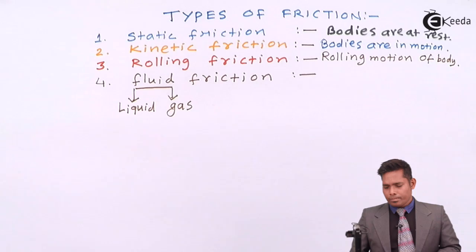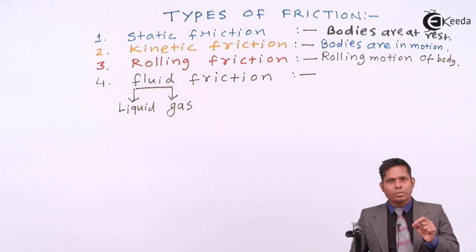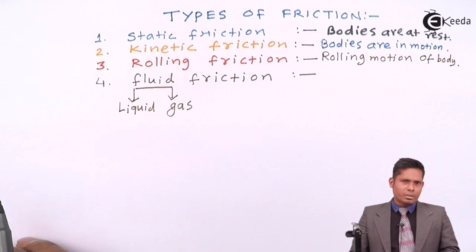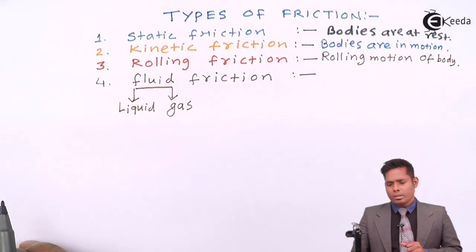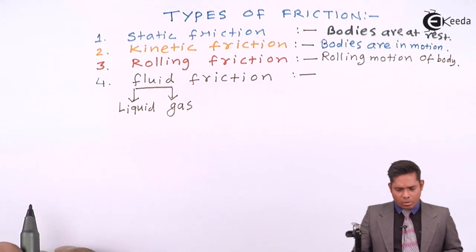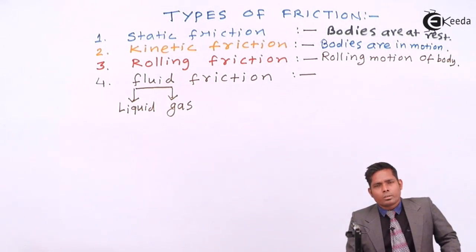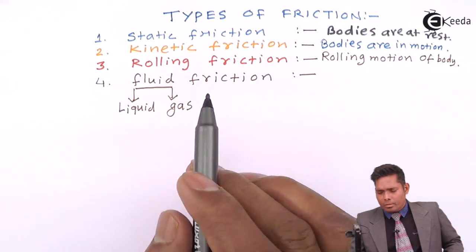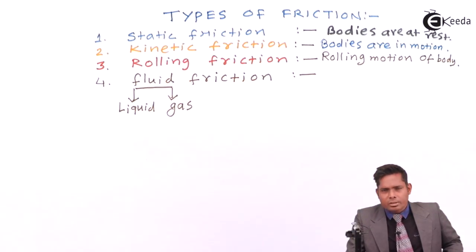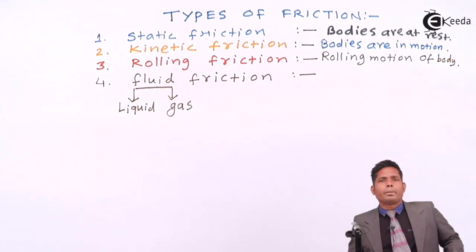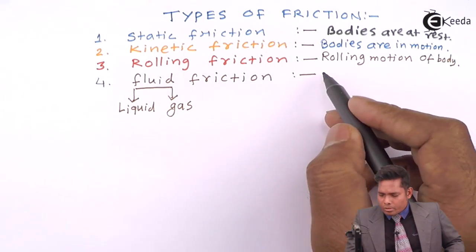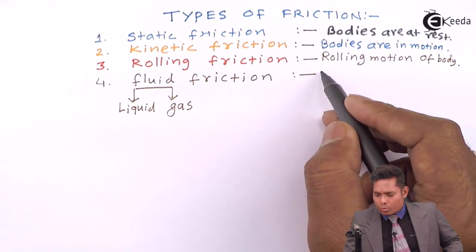An important point to note is that fluid friction depends on the velocity of the object moving through the fluid. Greater the velocity, greater the fluid friction. But rolling friction, kinetic friction, and static friction are not dependent on velocity — they are independent of velocity.